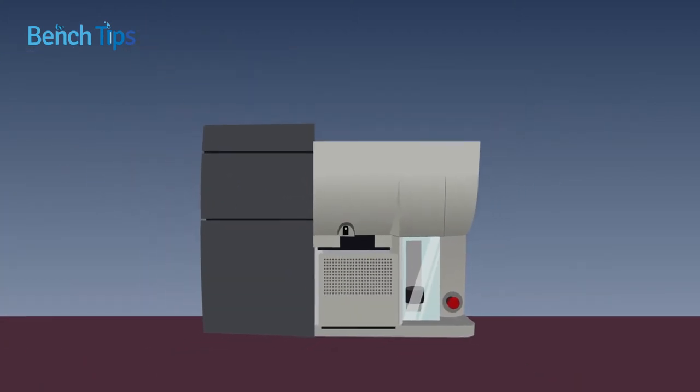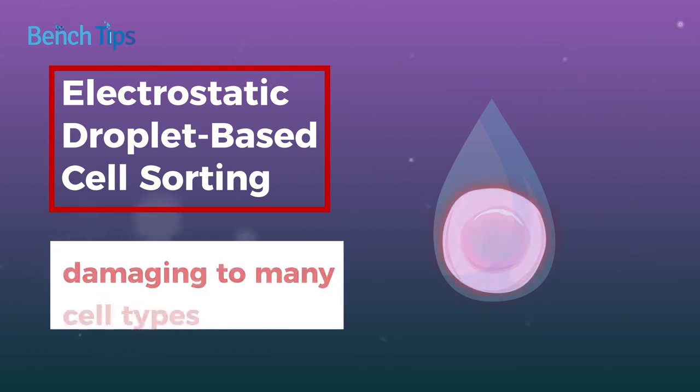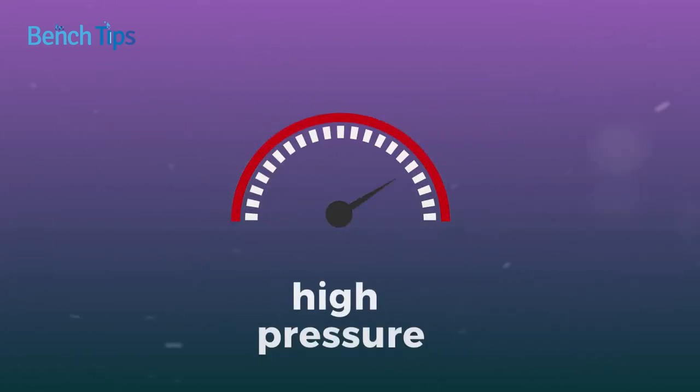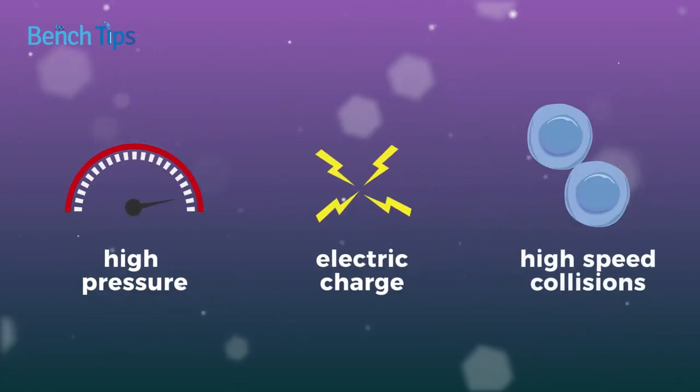Although both approaches offer distinct advantages, a major problem with electrostatic droplet-based cell sorting in general is that it can be damaging to many cell types. This is largely due to the combination of high pressure, electric charge, and the frequency at which high-speed collisions occur within a conventional cell sorter.